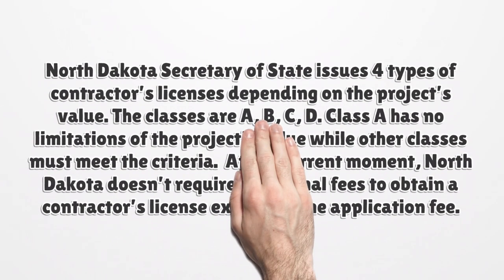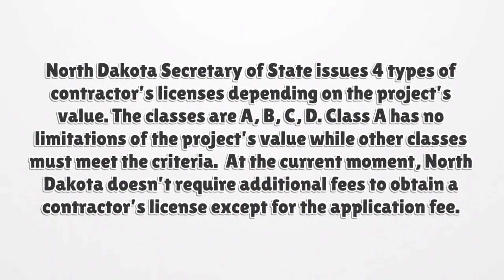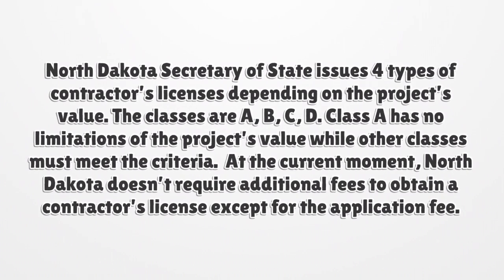North Dakota Secretary of State issues four types of contractor's licenses. Depending on the project's value, the classes are A, B, C, and D. Class A has no limitations on the project's value, while other classes must meet the criteria. At the current moment, North Dakota doesn't require additional fees to obtain a contractor's license except for the application fee.